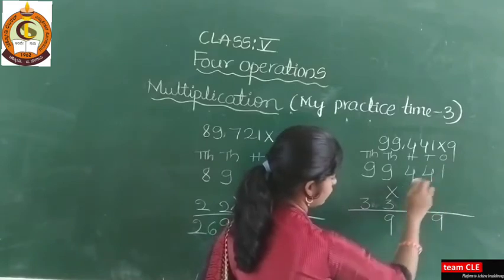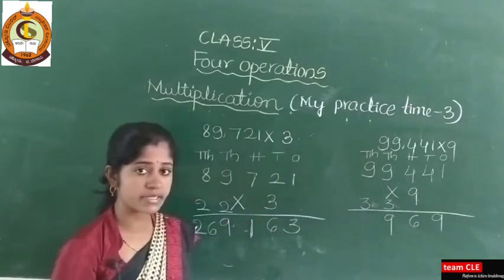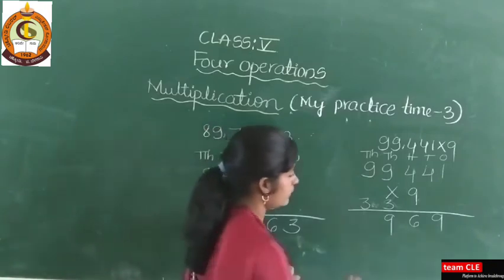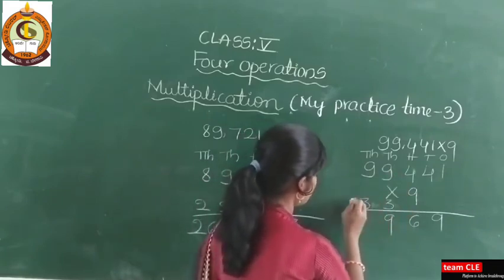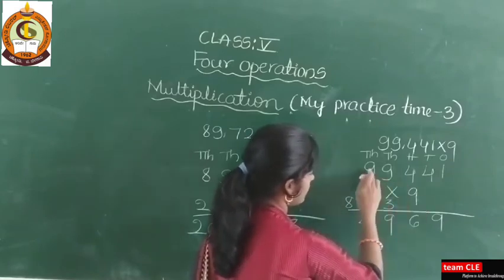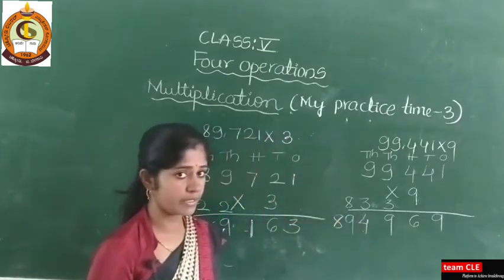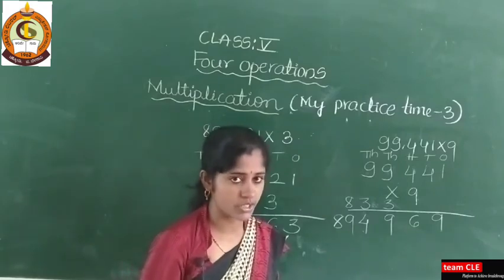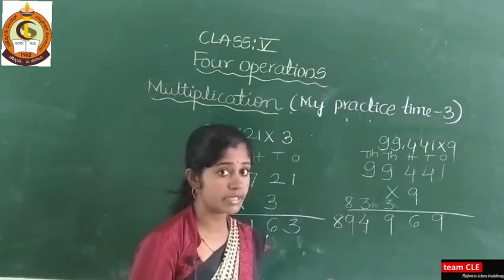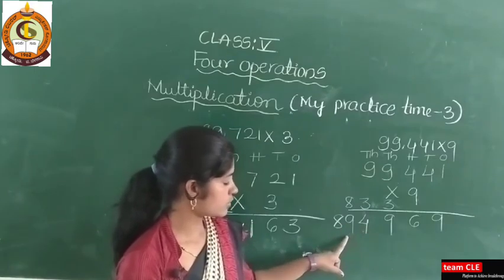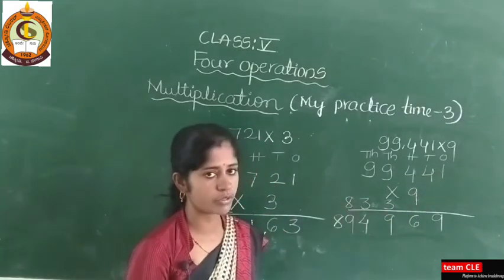9 nines are 81, but don't write 81 directly — there is a carry. 9 nines are 81, plus carry 3 is 84. Then 9 nines are 81, plus carry 8 is 89. See here I have used two operations: multiplication and addition. If you know addition, then only you can solve multiplication. You have to know the tables too. This is the second answer — this will be the product. First multiply, and while multiplying if you get carries, don't forget to add them. I have solved two examples here.